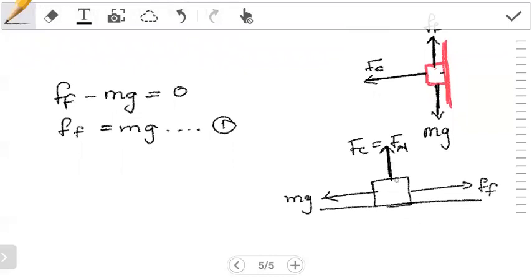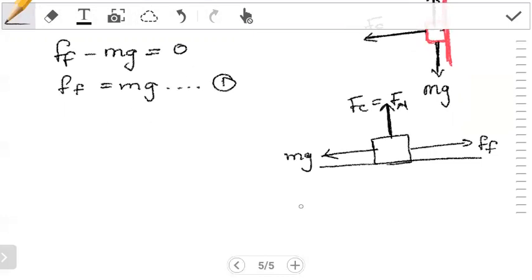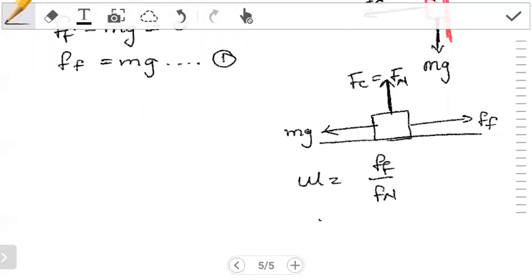Now the key thing was to notice that this is a normal force. Now this being a normal force, it can help us to find the friction. How? So you recall that the coefficient of static friction is a ratio between the force of friction and the force normal.